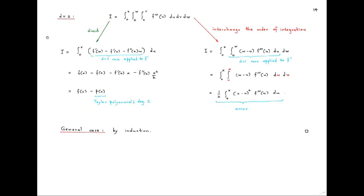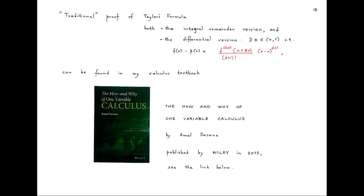Just as we used the d=1 case to settle the d=2 case, we can prove Taylor's formula in general by induction. This completes the proof of Taylor's formula. It is a somewhat unusual proof, but traditional proofs of Taylor's formula can be found in most calculus books, and in particular in the calculus book called 'The How and Why of One Variable Calculus,' published by Wiley in 2015. That book contains a traditional proof of Taylor's formula not just for the integral remainder version but also the differential version, where the error is expressed in terms of the (d+1)th derivative evaluated at some point between a and x.